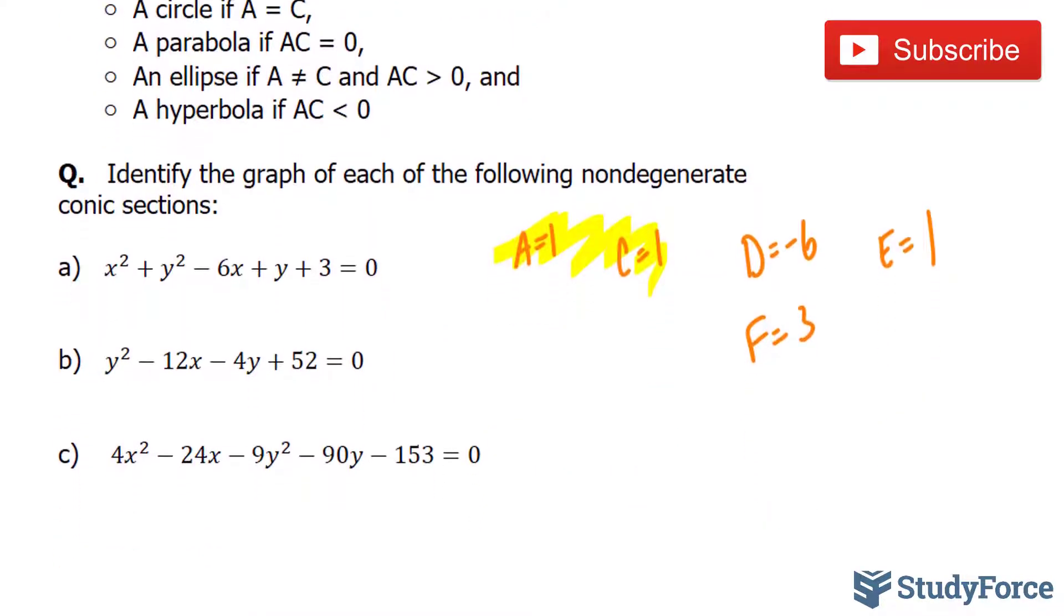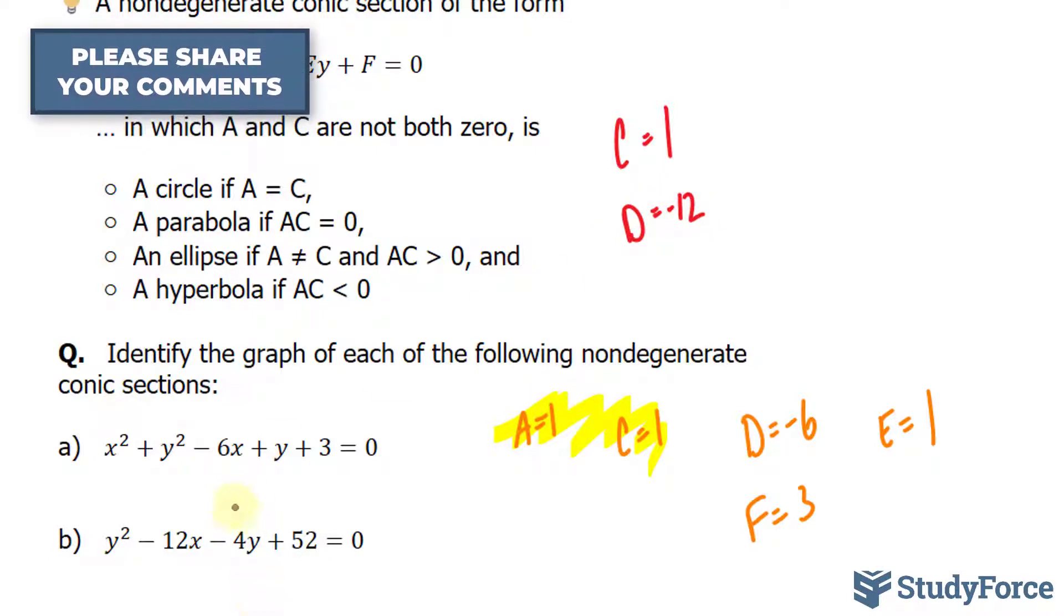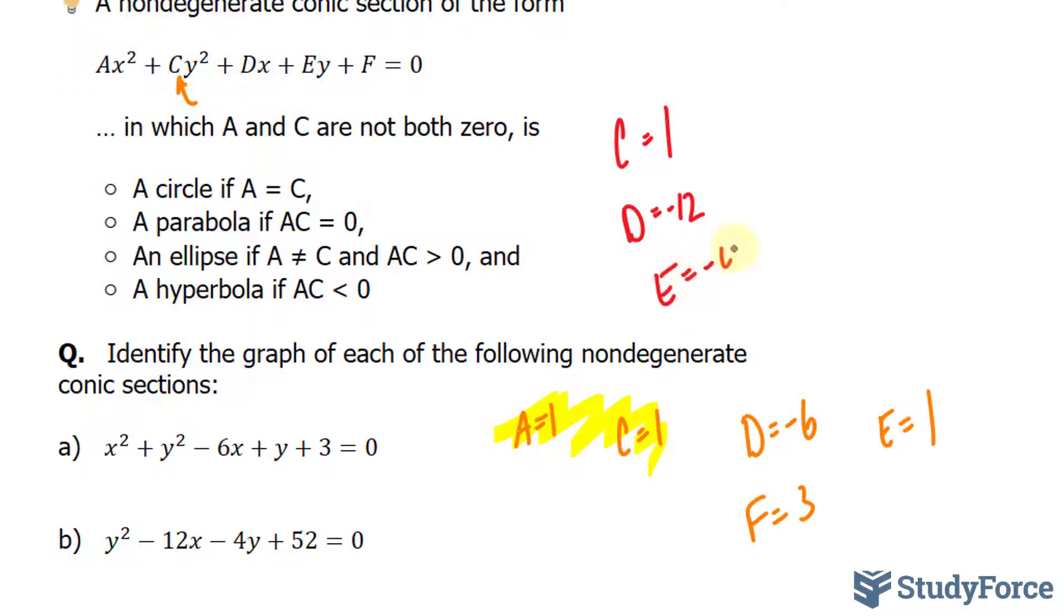Next, we have y² - 12x - 4y + 52 = 0. Let's outline these coefficients. Notice y² is C = 1, -12 is D, -4 is E, and F = 52. Notice we don't have an x² term, so A = 0.